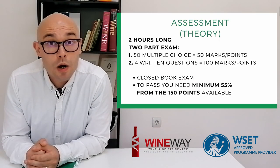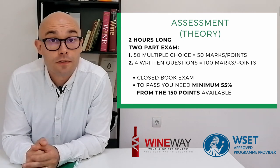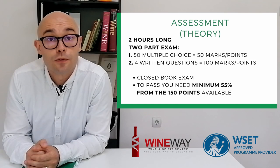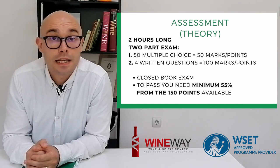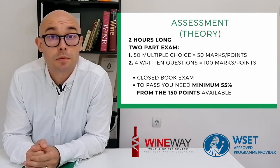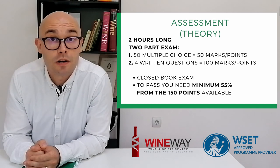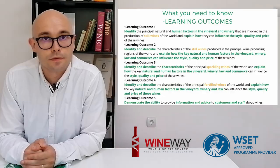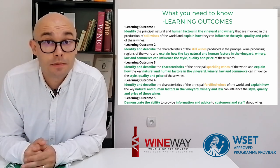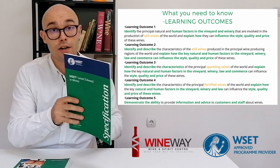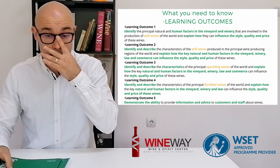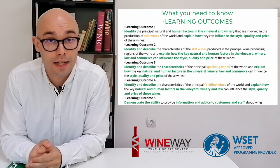The theory part of the exam is two hours long and consists of 50 multiple choice questions for which you get a maximum of 50 points, and four short written answers for which you get a maximum of 100 points. In order to pass this exam you'll need a minimum of 55% of the available points. Your knowledge will be tested on five learning outcomes that WSET defines specifically in their specification guidelines on page 8.